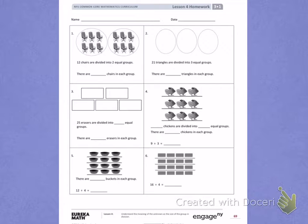This is Module 1, Lesson 4. Today's objective is to understand the meaning of the unknown as the size of the group in division.